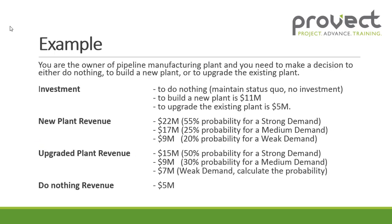In example 2, you are a pipeline manufacturing plant owner and you need to make a decision to either do nothing, to build a new plant, or to upgrade the existing plant. For doing nothing there will be no investment and you will maintain the status quo of the plant. To build a new plant there will be an investment of 11 million dollars. To upgrade the existing plant there will be an investment of 5 million dollars.